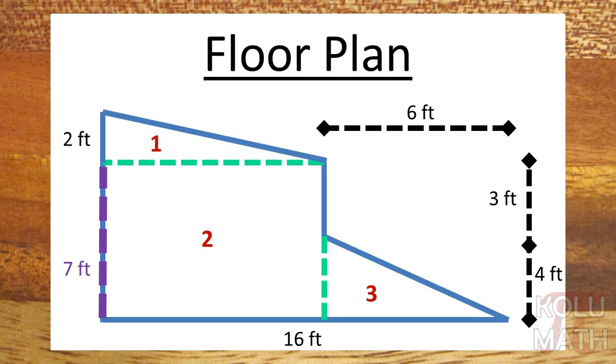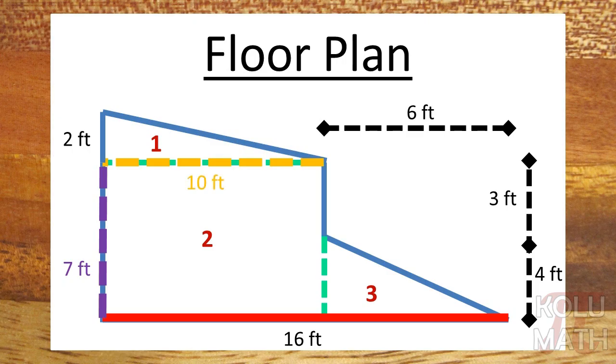So I've got the height for the triangle there, number one. Can I figure out the base of that triangle? I know that the base of the whole figure here is 16 feet. And I also know that this length up here is six feet. So if the base is 16 feet and that piece over there is six feet, that means the piece to the left, that yellow part over there, would have to be ten. Because ten plus six is 16.